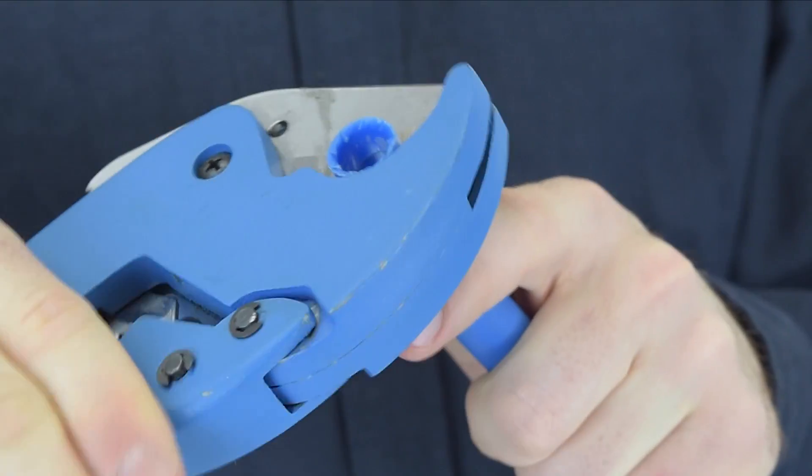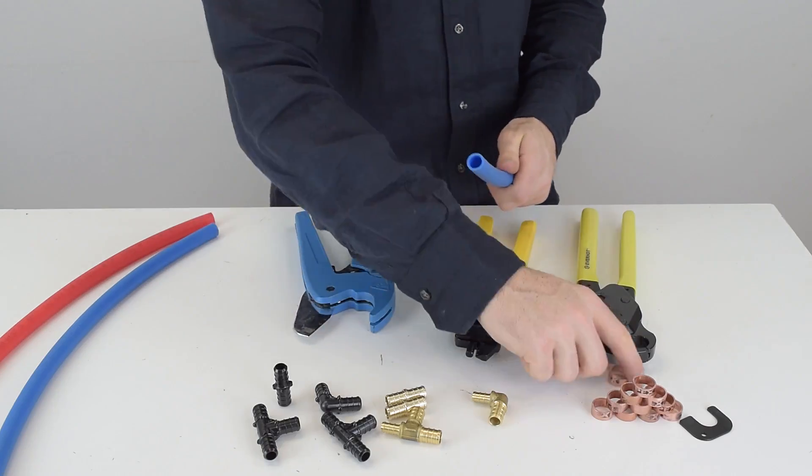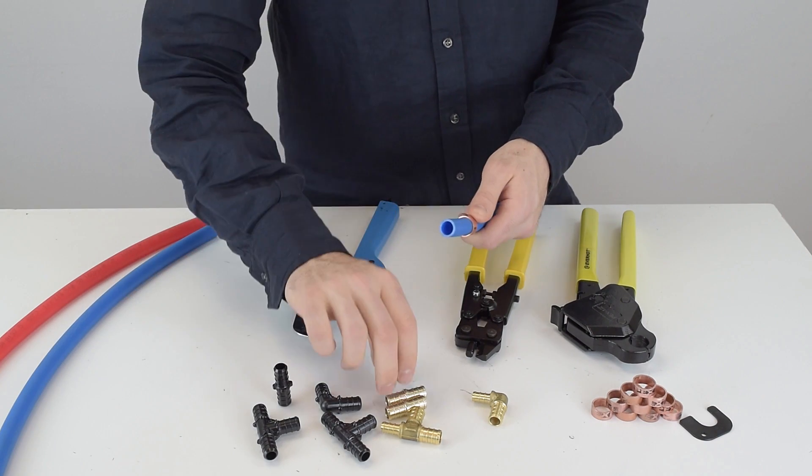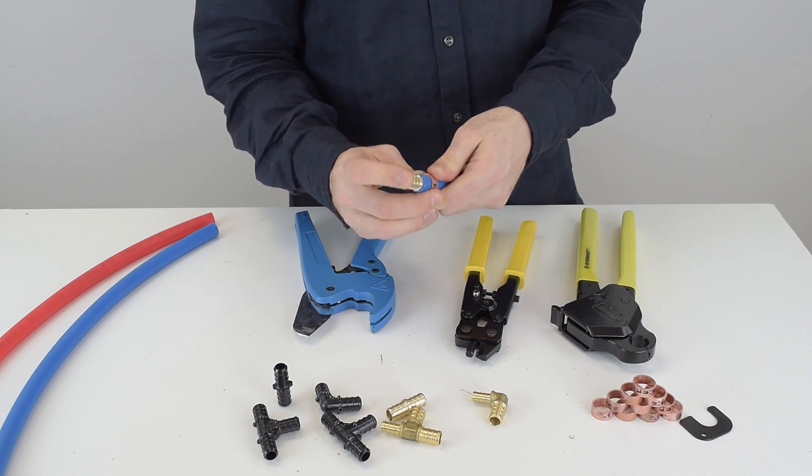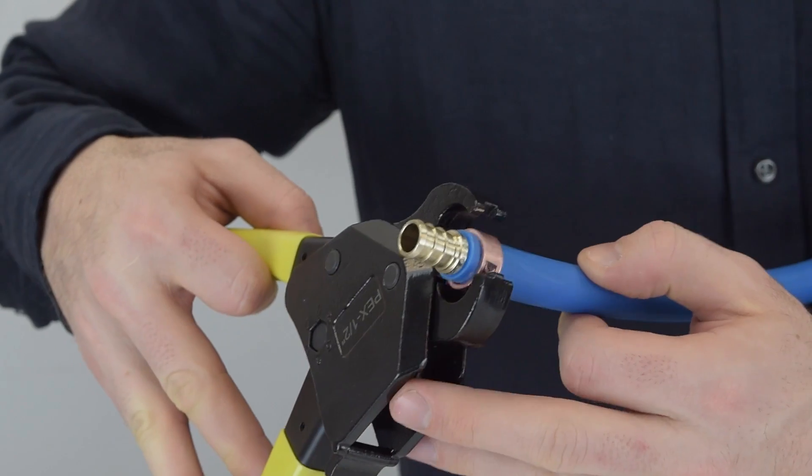Next, you're going to take your crimp ring, slide it onto the tubing, and then pick whatever fitting you want to place on and slide it back approximately one-eighth of an inch away from the fitting.